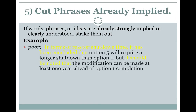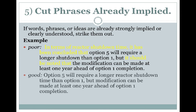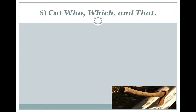The next one: cut phrases that are already implied. These are phrases we use frequently as filler space — we think they sound good, but in fact the writing sounds better without them. For example: 'in terms of,' 'it has been concluded that,' 'it should be noted that' — well, if you're writing it down, obviously it should be noted. The cleaner version without that material is much better. This isn't a hard-and-fast rule, but it's a good one to live by.